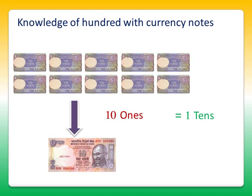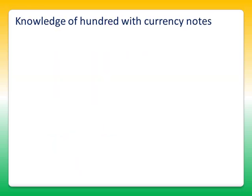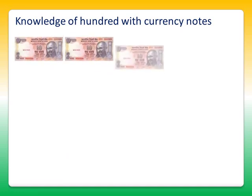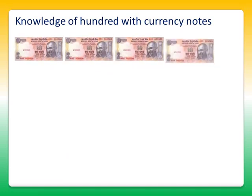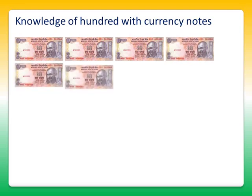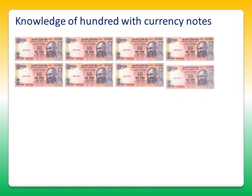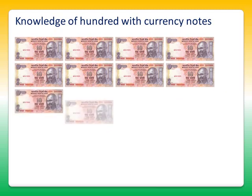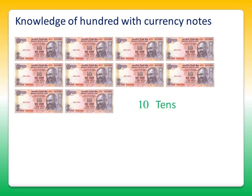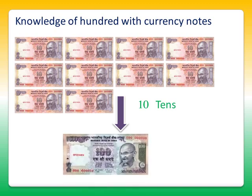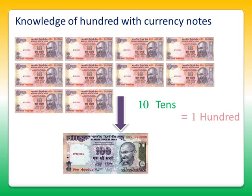So students, let's take 10 rupee notes. It's 1, 2, 3, 4, 5, 6, 7, 8, 9, and 10. Ten 10-rupee notes means 10 tens. And 10 tens are equal to 1 hundred-rupee note, which we call 100. So 10 tens are equal to 100.